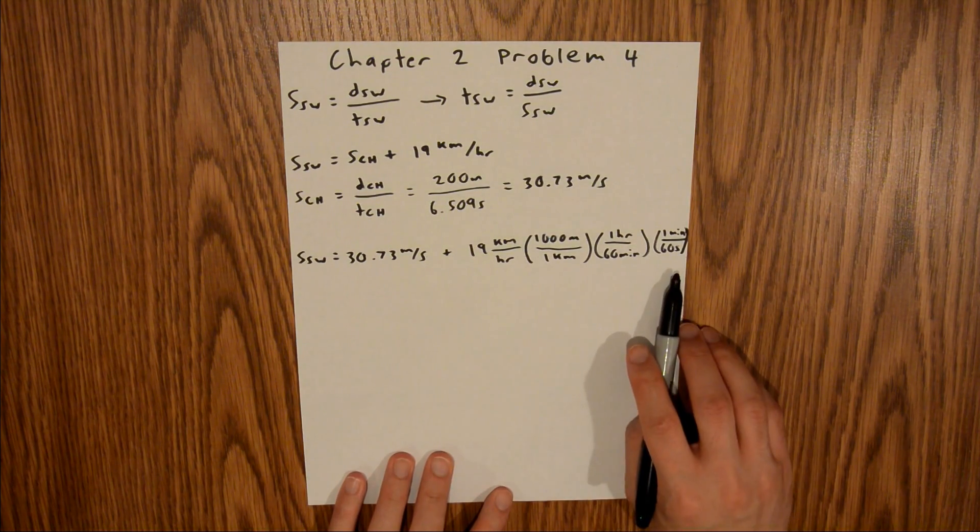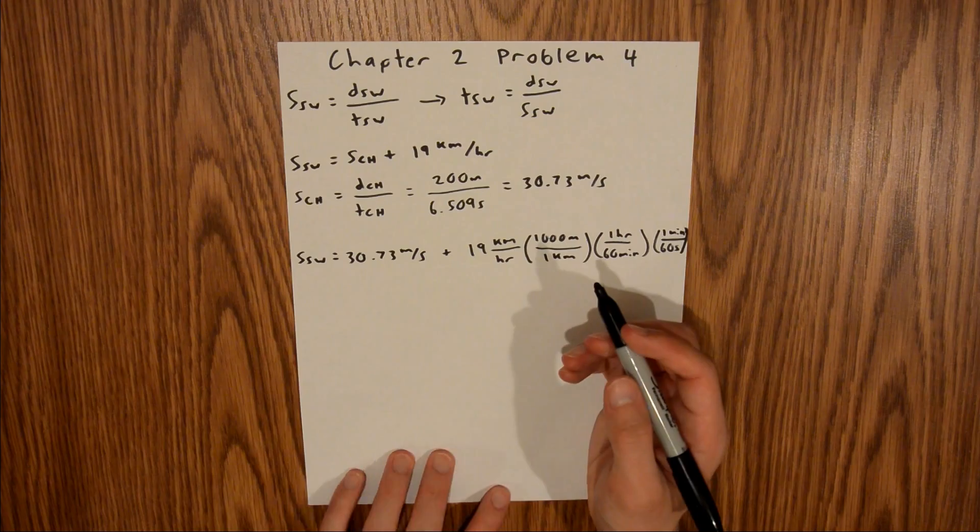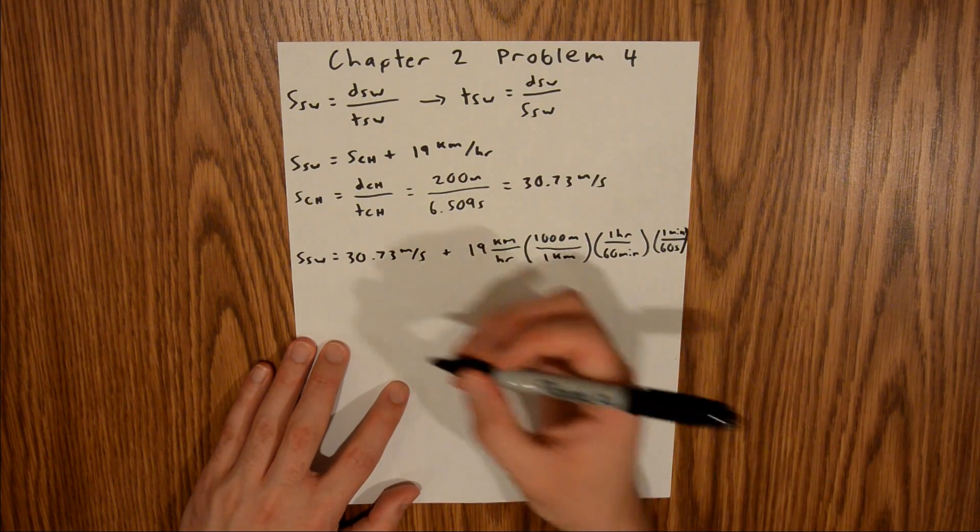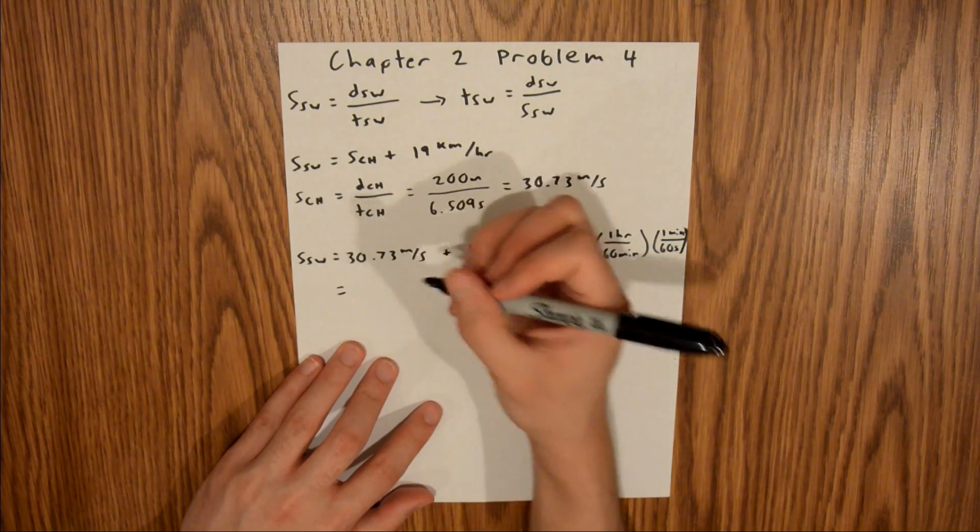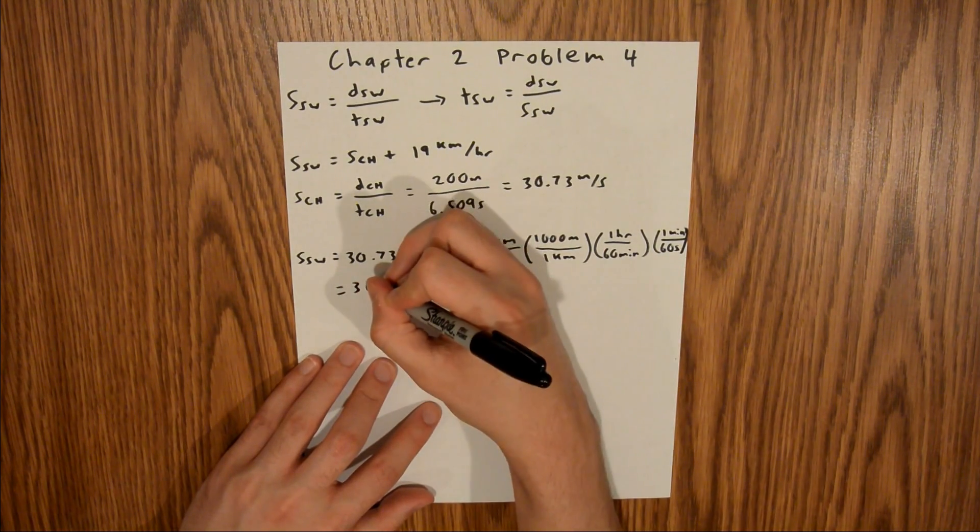Now our units here will be meters per second, which align with this. If you plug that into your calculator, you will find that the speed of SW is equal to 36 meters per second.